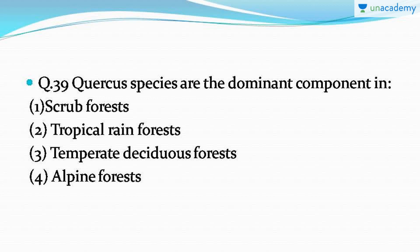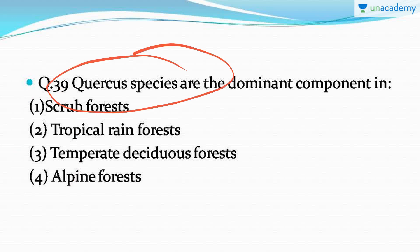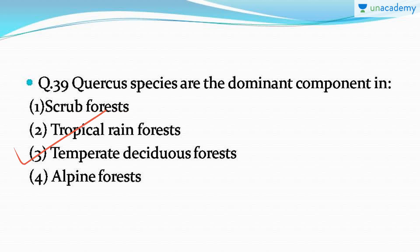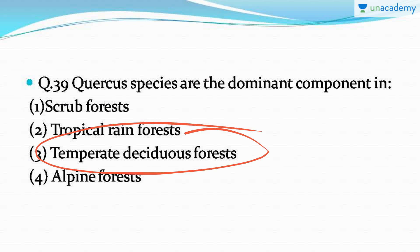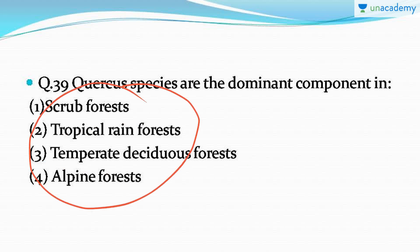Question number 39: Quercus species are the dominant component — in which of the following forests is Quercus species found? The correct answer is option number three: temperate deciduous forests, because Quercus species find a suitable environment to grow there. This topic from the ecology section is one of the most important topics in class 12th NCERT, so go through all the types of forests and the species dominant in them.